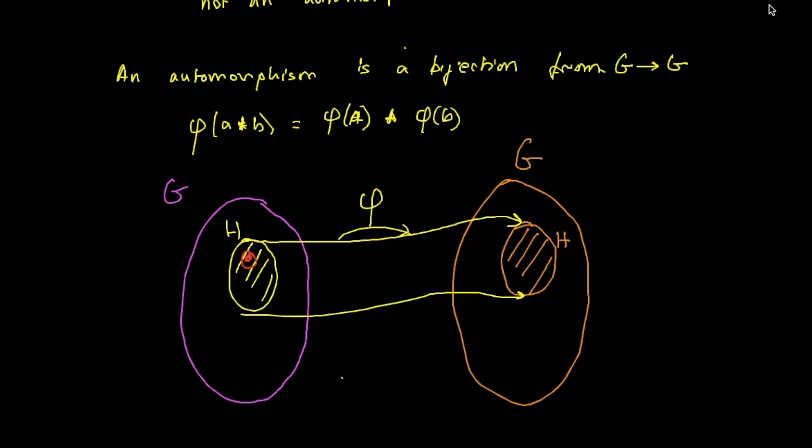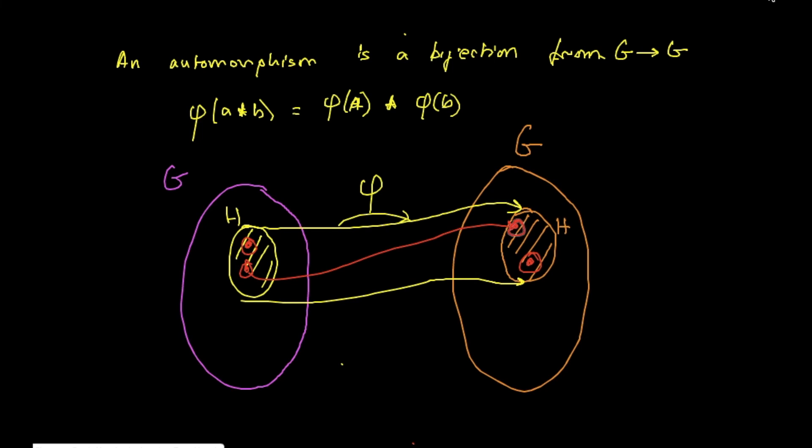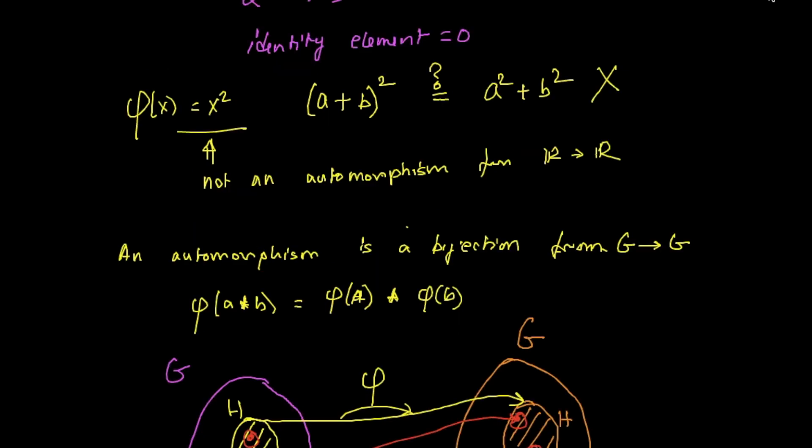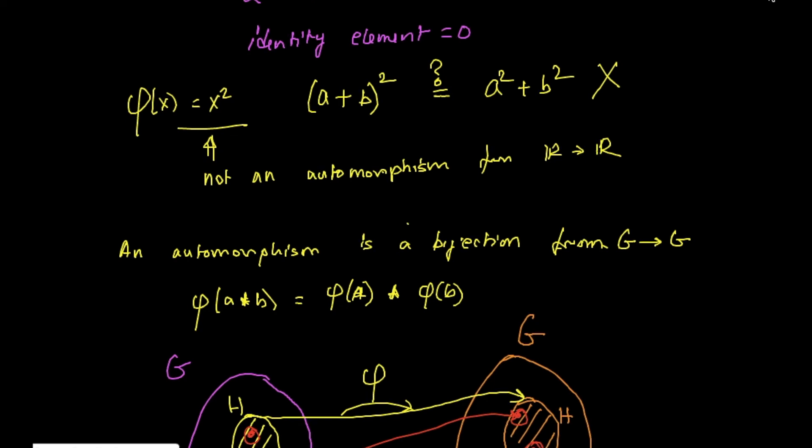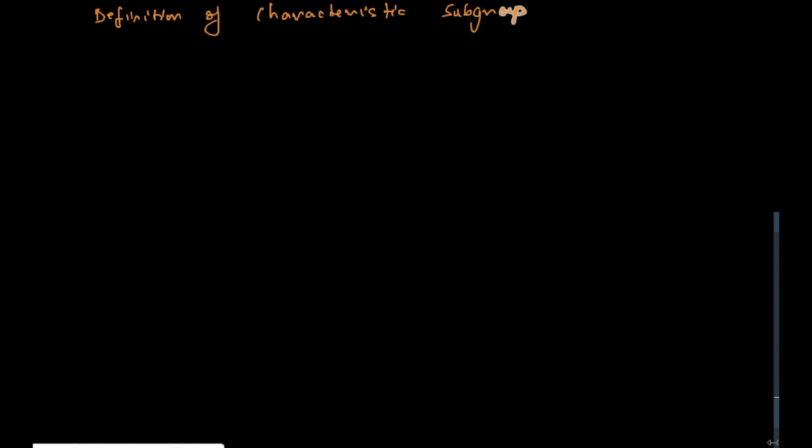Points inside H can be moved around - maybe this point here goes to that point there. Things can move around inside H. But as a whole, this set H is mapped to itself. All the image points from here are inside H. So H remains invariant under phi. Mathematicians are very interested in things that do not change, because those are the things that give us some property of the underlying set and the maps we are looking at.